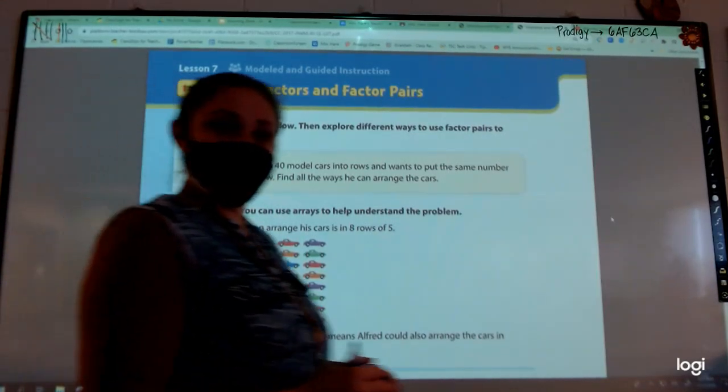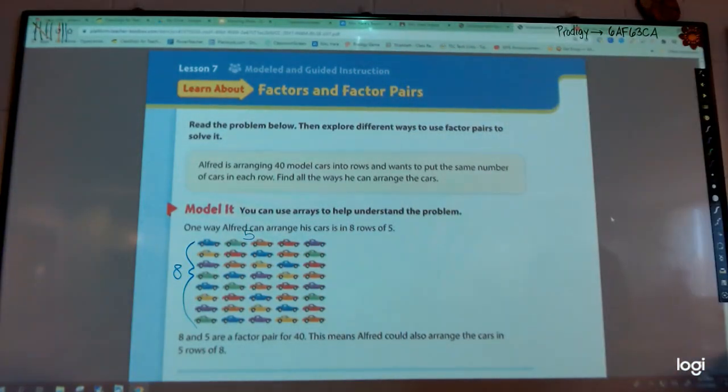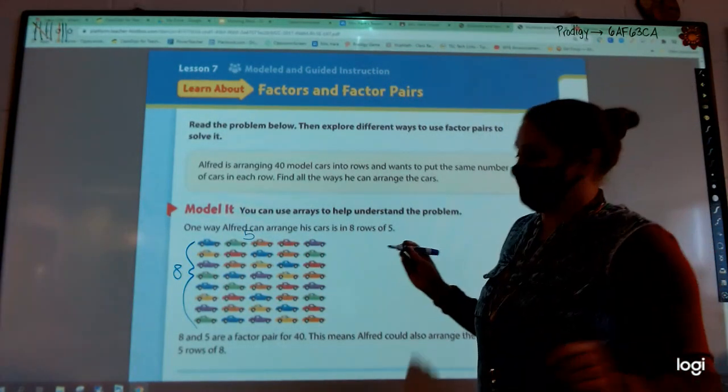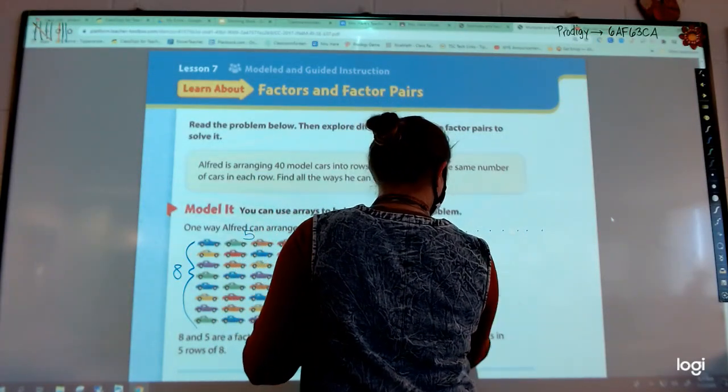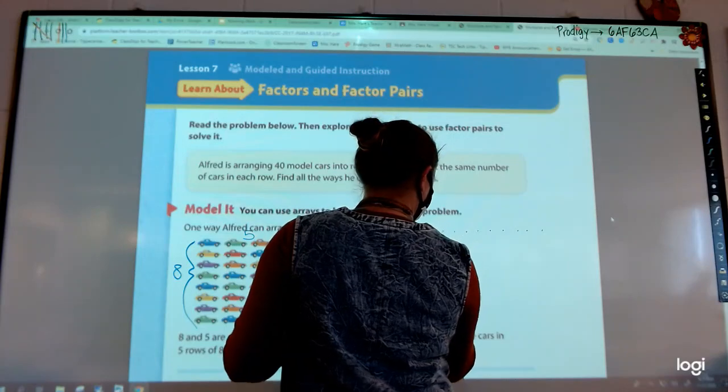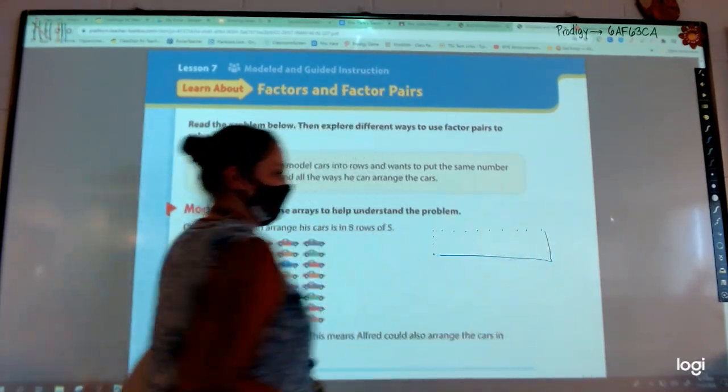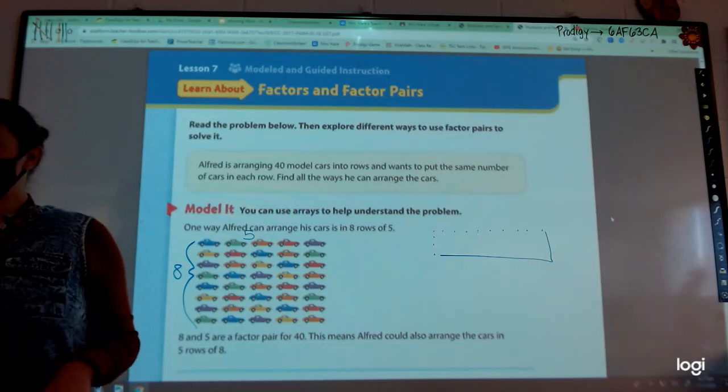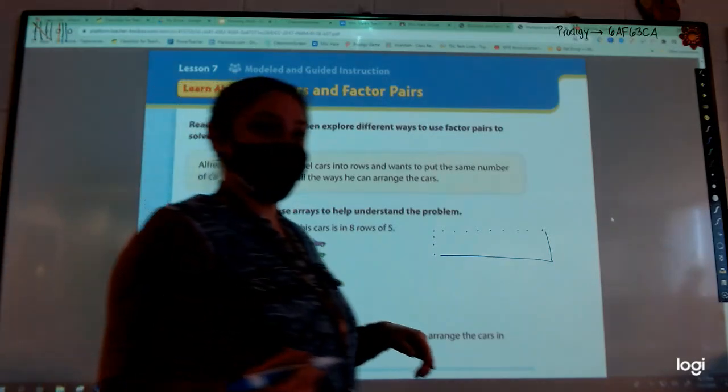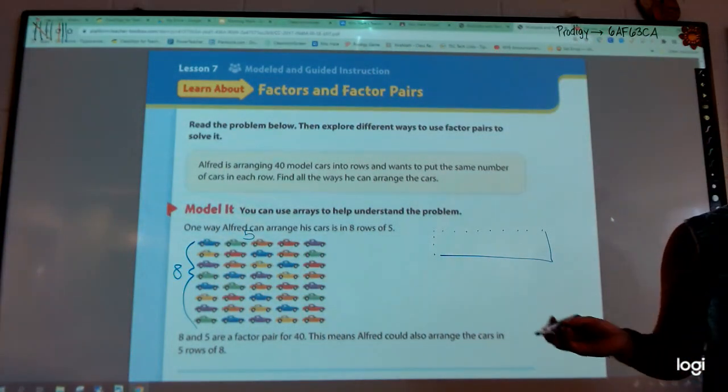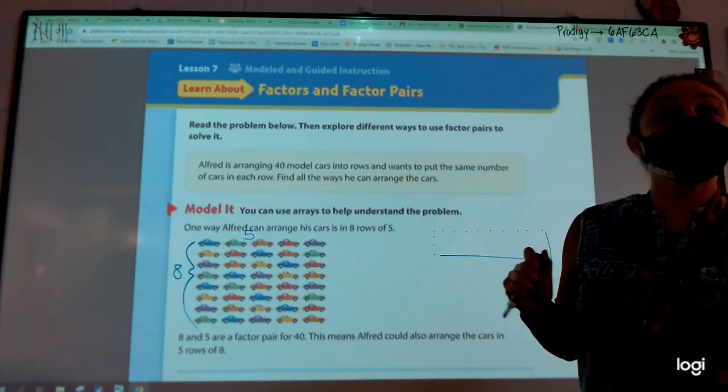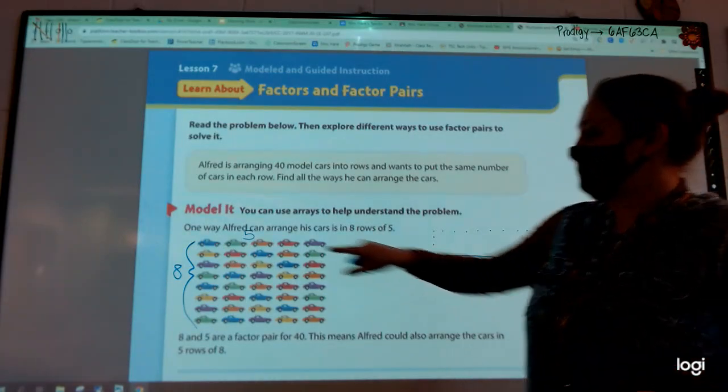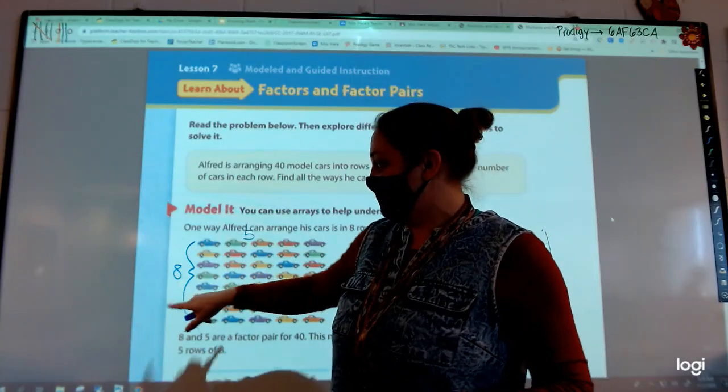Ten times four. Now, I am not going to draw this every time. There's too many cars. But one, two, three, four, five, six, seven, eight, nine, ten times one, two, three, four. If I filled that all the way in, that would be a different way to arrange it. Is ten times four still 40? Yes. What's one other combination that would still get me to 40 cars that's different than the first two? Five times eight. So we did eight rows of five. We could do five rows of eight.